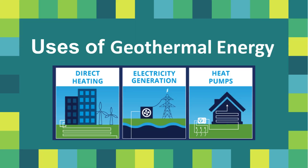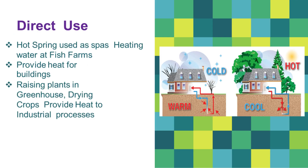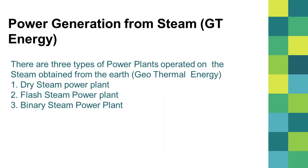There are two types of uses of geothermal energy: direct use and indirect use. Direct uses include hot springs used as spas, heating water at fish farms, providing heat for buildings, raising plants in greenhouses, drying crops, and providing heat to industrial processes. The indirect use of geothermal energy usually refers to electricity generation using heat from the geothermal source; this geothermal power plant is similar to steam power plants but uses the earth as the natural boiler. There are three types of power plants operated on steam obtained from the earth: dry steam power plants, flash steam power plants, and binary steam power plants.